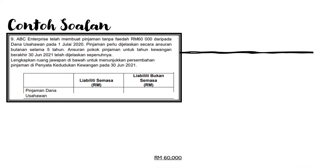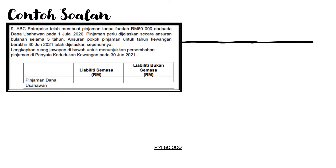Let's see an example question. APC Perhat telah membuat pinjaman tanpa faedah RM60,000 daripada dana usahawan pada 1 Julai 2020. Pinjaman perlu dijelaskan secara ansuran bulanan selama 5 tahun. Ansuran pokok pinjaman untuk tahun kewangan berakhir 30 Jun 2021 telah dijelaskan sepenuhnya. Lengkapkan ruang jawapan di bawah untuk menunjukkan persembahan pinjaman di penyata kedudukan kewangan pada 30 Jun 2021.